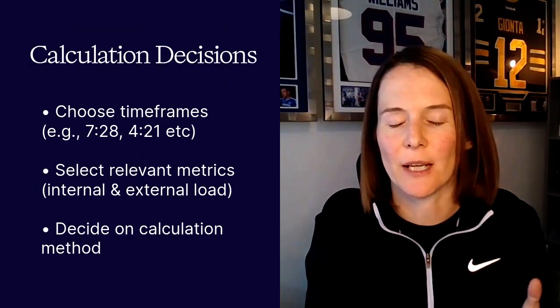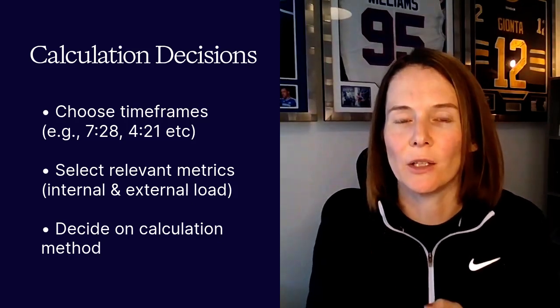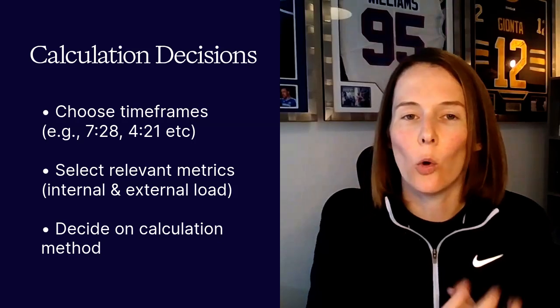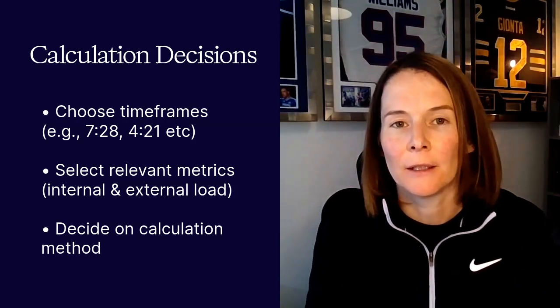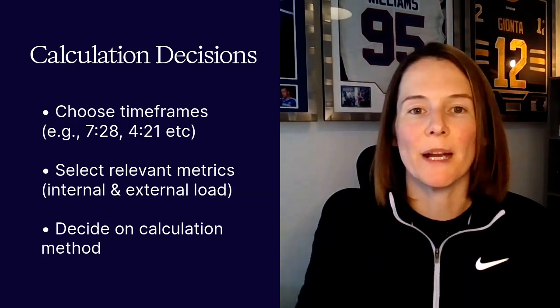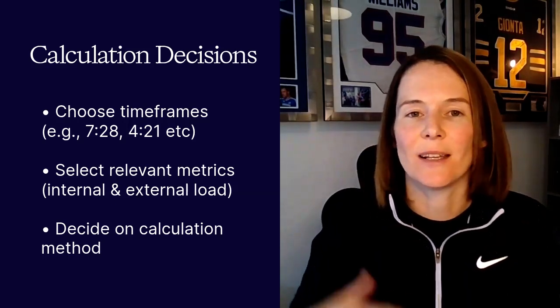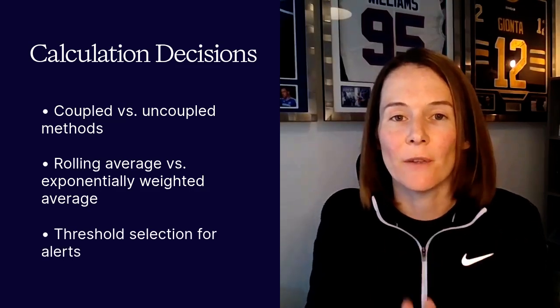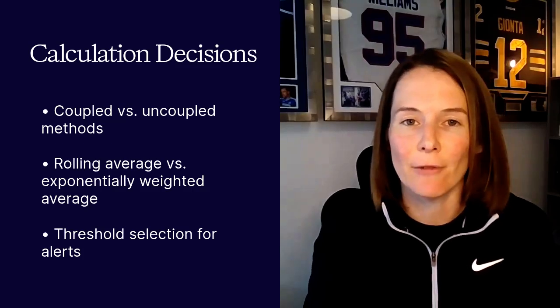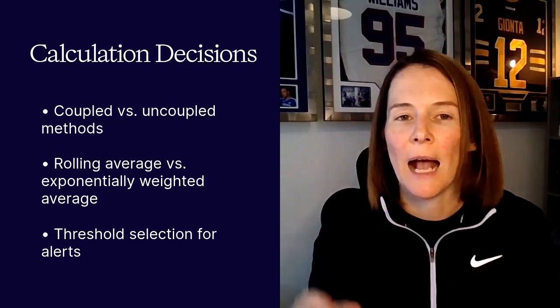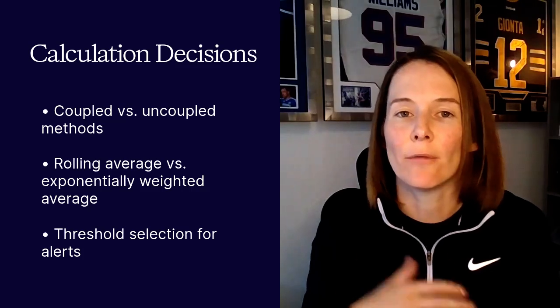With the acute chronic workload ratio, we have a number of decisions in terms of how to calculate it. We have to decide what timeframes we're using — eight and 28 days, or one week and four weeks, are most commonly used, but that doesn't necessarily mean they're best. We can calculate this ratio for all the metrics we're using, both internal and external load. We can also choose between the coupled versus uncoupled method, as well as the rolling average compared to the exponentially weighted average.